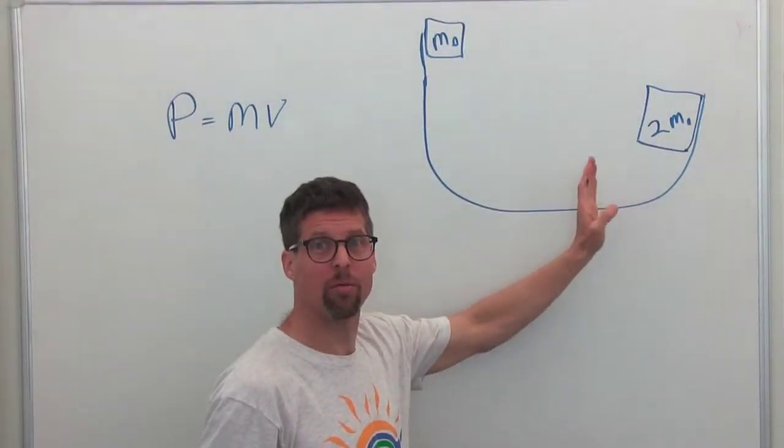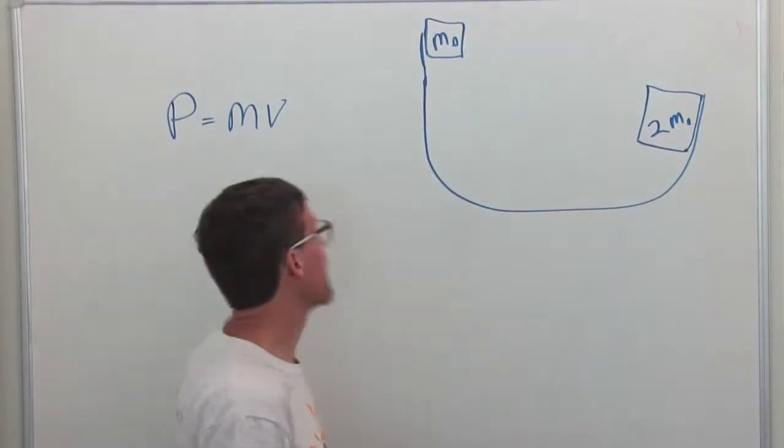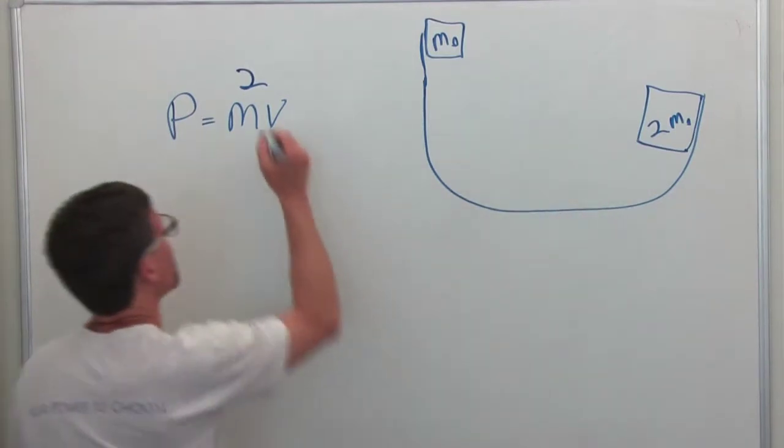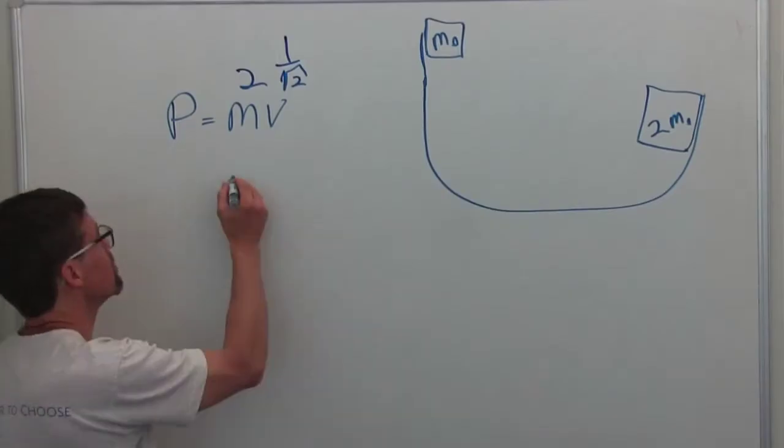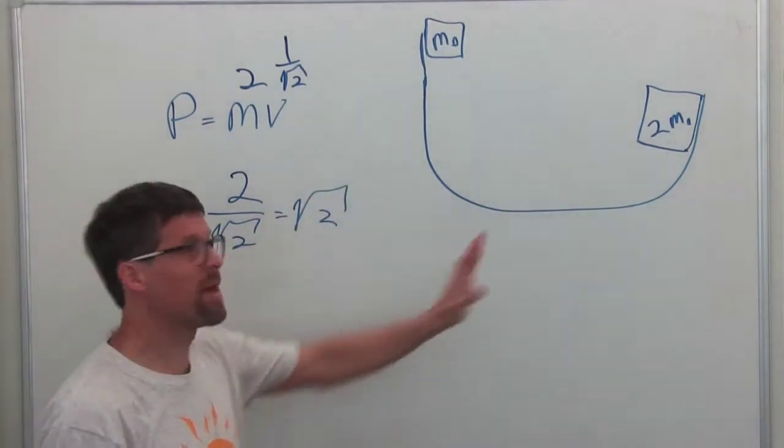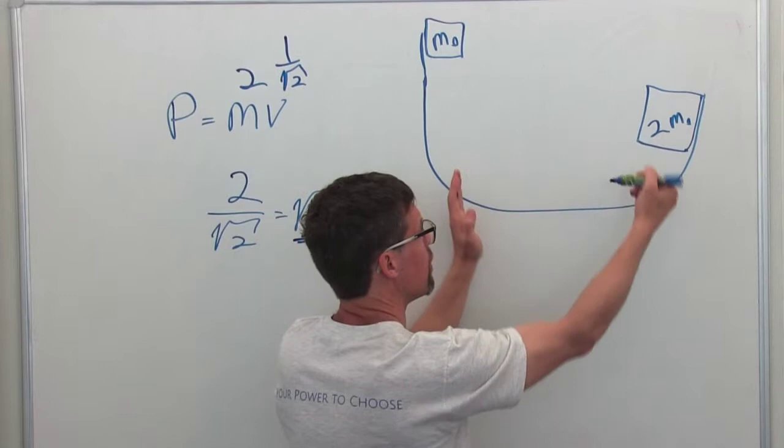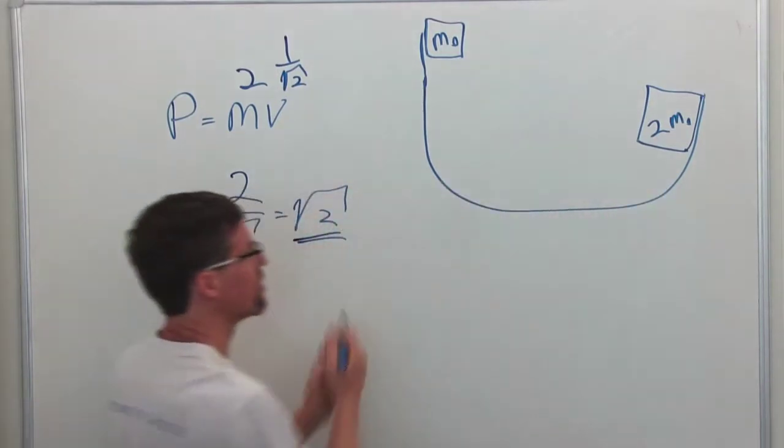So the mass of the skateboarder on the right is greater by a factor of 2, but his velocity is smaller by a factor of square root 2. So the momentum of the one on the right is greater by a factor of square root of 2. So this one wins, and when they stick together, it moves to the left.